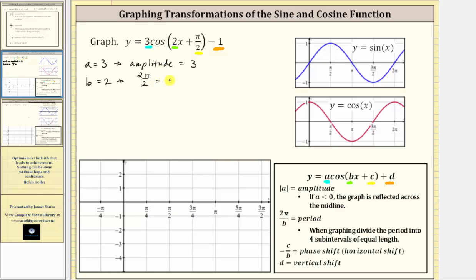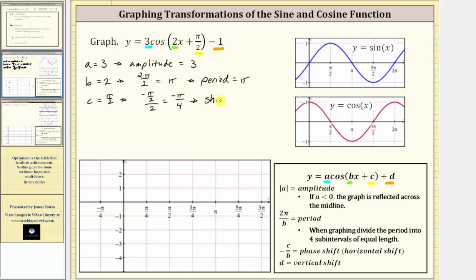We know that negative c divided by b is going to be negative pi over two divided by two. Dividing by two is equivalent to multiplying by one half. Negative pi over two times one half is negative pi over four. So because negative c divided by b equals negative pi over four, we have a horizontal shift of left pi over four units.